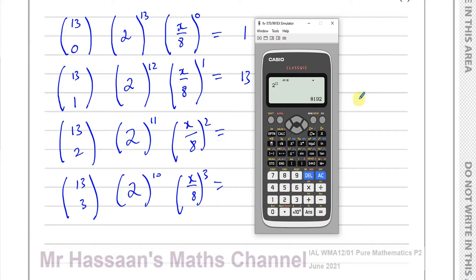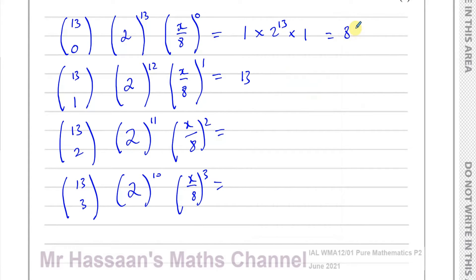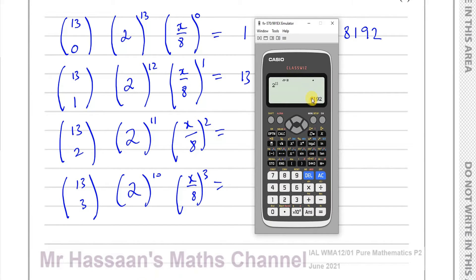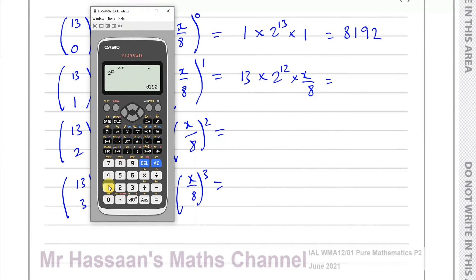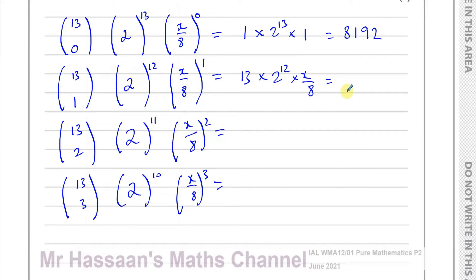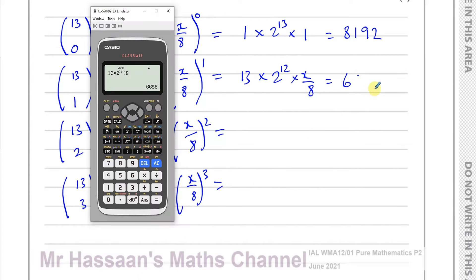2 to the power of 13 gives you 8192, so that's the first term. Then you've got 13 times 2 to the power of 12, times x/8. I can put that in my calculator as 13 times 2 to the power of 12, divided by 8, which gives me 6,656.